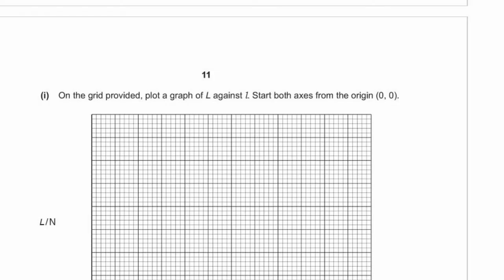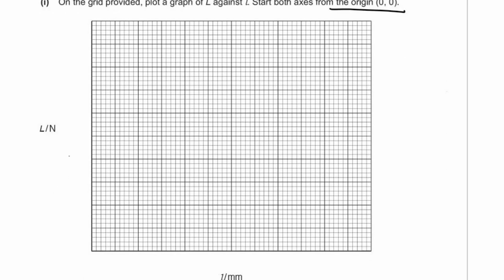On the grid, plot the weight L against the length of the spring, starting both axes from the origin. They're telling us the graph must start from 0,0 — do not jump the axis even if it would give a better scale, because they've clearly stated it. On the y-axis we go up to 5 newtons; on the x-axis we go up to at least 82 mm, so scale to 100. Mark in the data points: 1N = 39 mm, 2N = 50 mm, 3N = 60 mm, 4N = 73 mm, 5N = 82 mm.